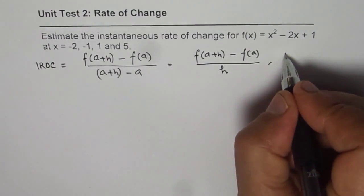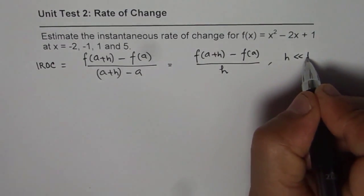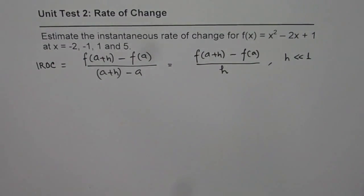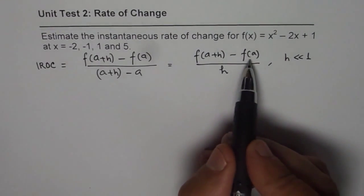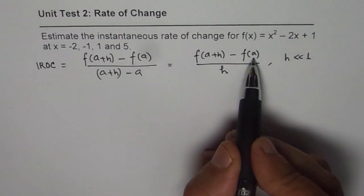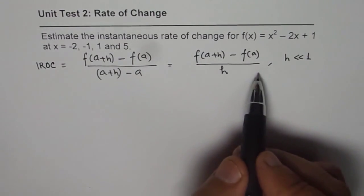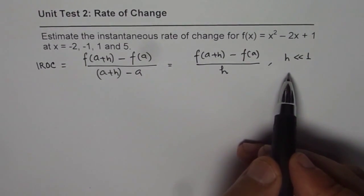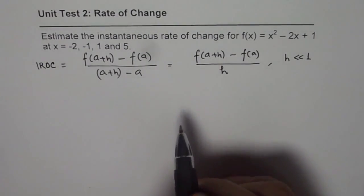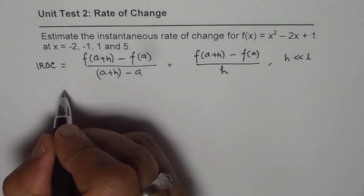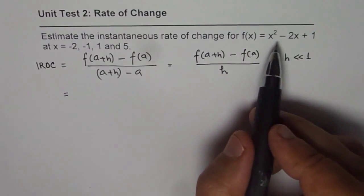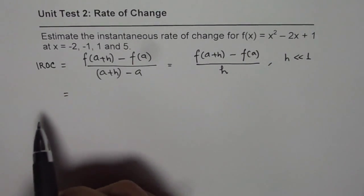Here h is very small compared to one, so we are considering two points: one at x equals a, the other at x equals a plus h. Since the two points are very close, the slope of the secant becomes the slope of the tangent, and therefore it is instantaneous rate of change. Let us first find a general expression and then substitute these values to find instantaneous rate of change at different points.